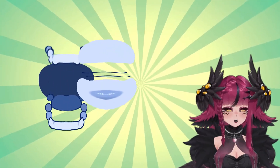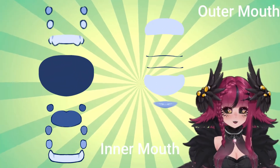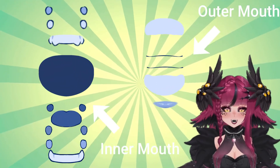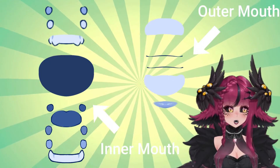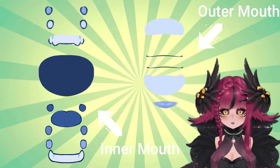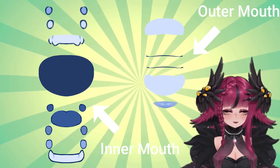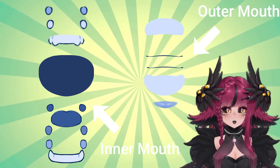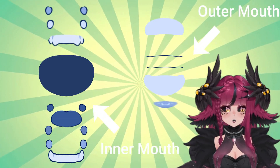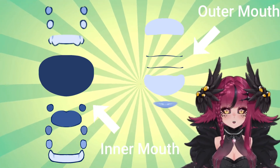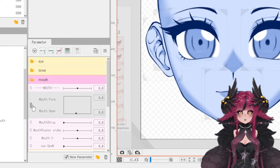Before we start rigging, we want to make sure that our mouth is properly separated to be layered. I have a portion called the inner mouth and the outer mouth, and both sides are divided into a top section and a bottom section. Now let's get to actually rigging the mouth.